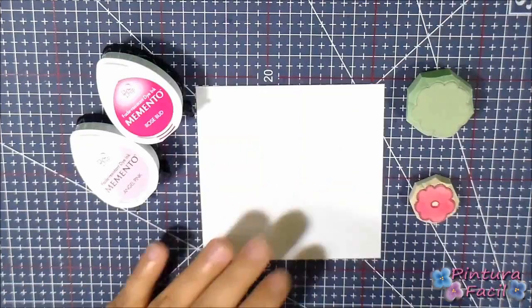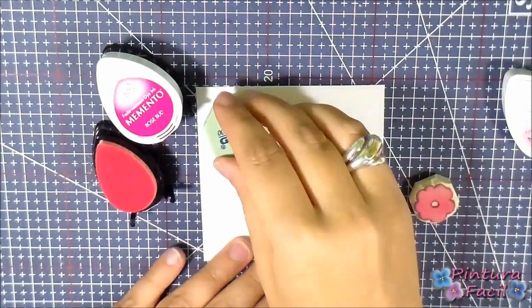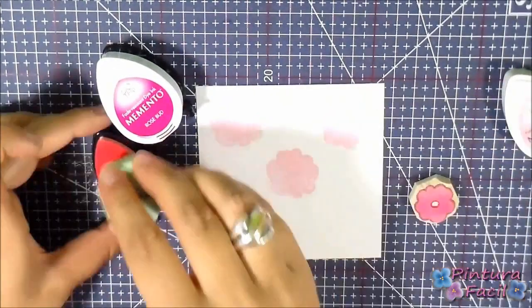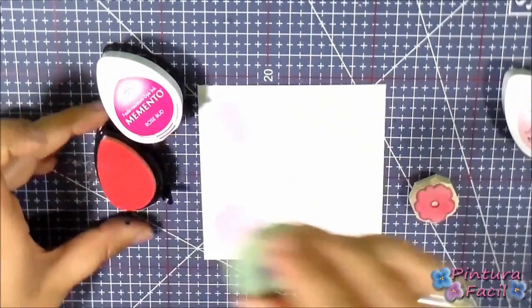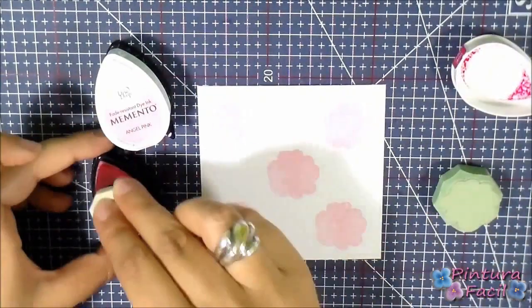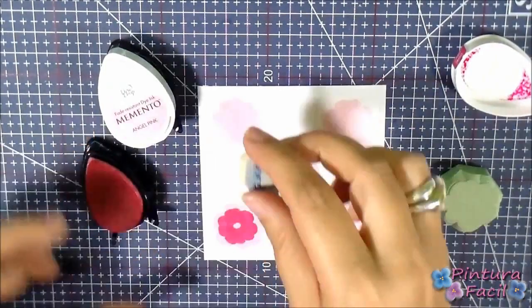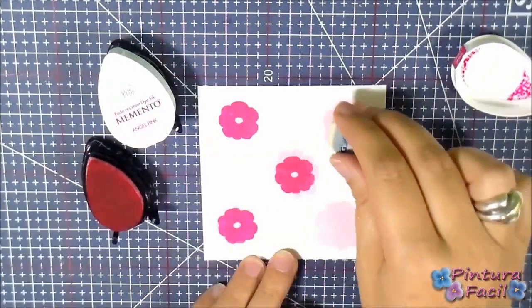First, stamp using the big flower and a light pink ink all around the white cardstock square. Using the smallest flower stamp and dark pink ink, stamp flowers on top of the previous ones.